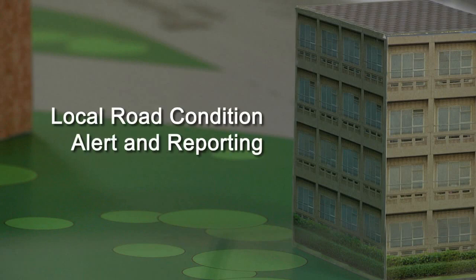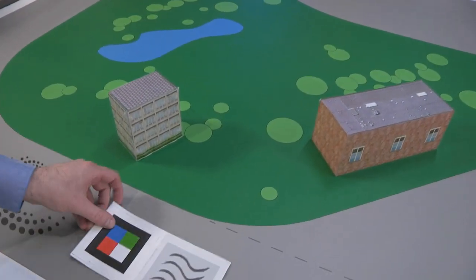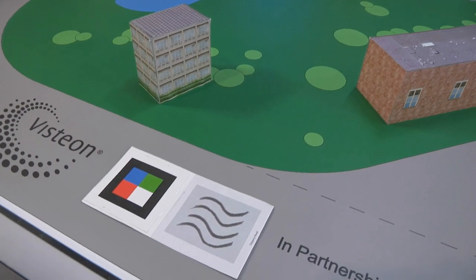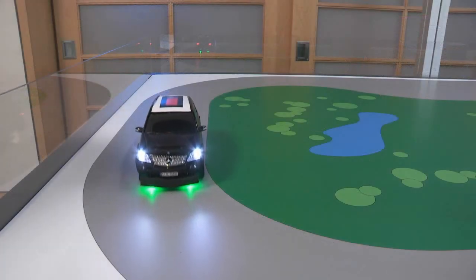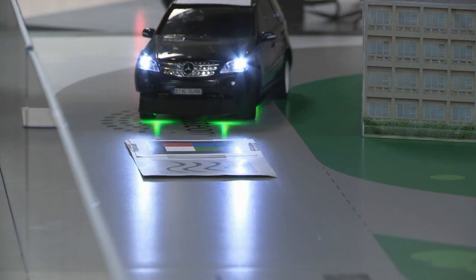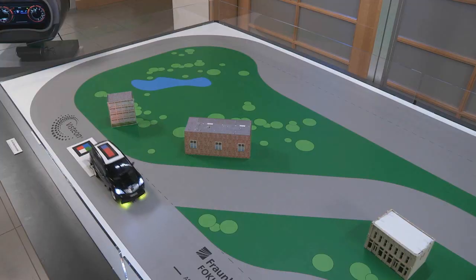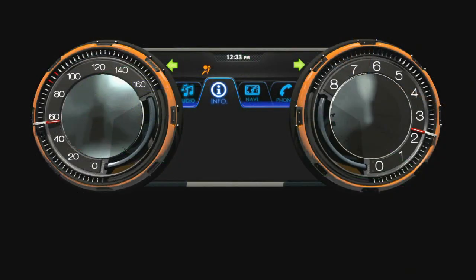Local Road Condition Alert and Reporting provides the driver with information about upcoming adverse road conditions. This paper represents a slippery spot on the road. Another vehicle equipped with a V2X module has driven over the slippery location on the road.